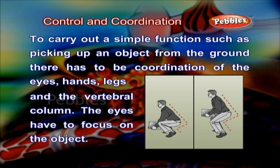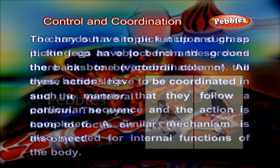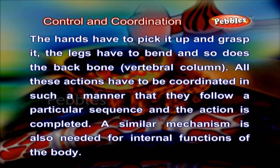To carry out a simple function such as picking up an object from the ground, there has to be coordination of the eyes, hands, legs and the vertebral column. The eyes have to focus on the object, the hands have to pick it up and grasp it, the legs have to bend and so does the backbone. All these actions have to be coordinated in such a manner that they follow a particular sequence and the action is completed.